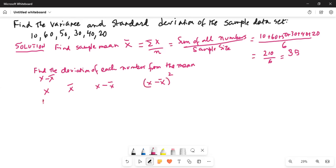So the first x is 10, x̄ is 35. So 10 minus 35 is minus 25. So this is minus 25 squared, which is minus 25 times minus 25, which is 625. Next number is 60, mean is still 35. 60 minus 35 is 25, and then we have 25 squared, which will be also 625.